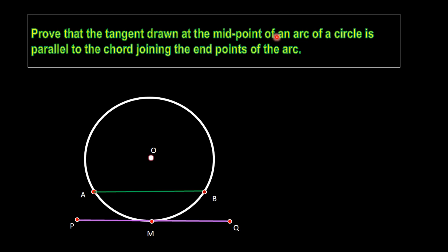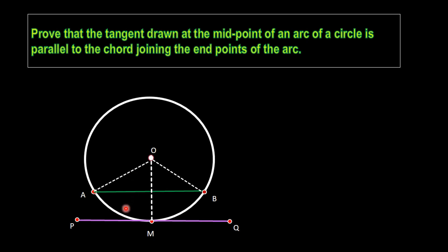By joining the endpoints of the arc we get chord AB. We have to prove AB is parallel to PQ. To do so, let us join radii OA and OB, and then join OM. These three points A, B, M are on the circle and OA, OB, OM are radii. Since M is the midpoint of arc AB, arc AM equals arc MB.